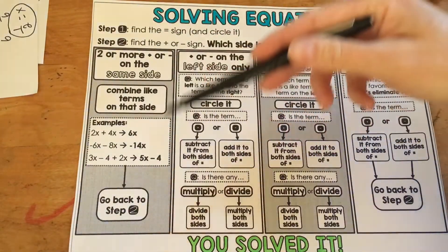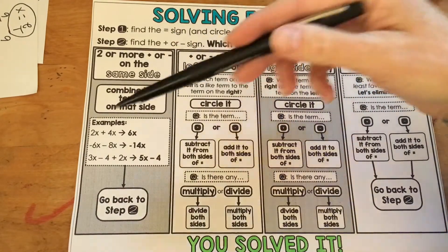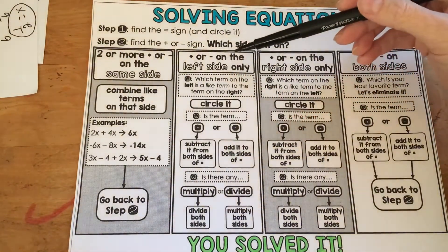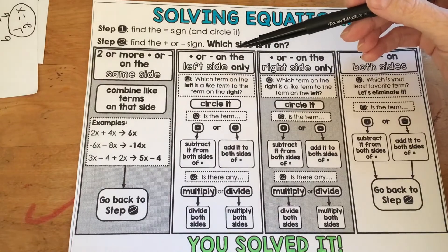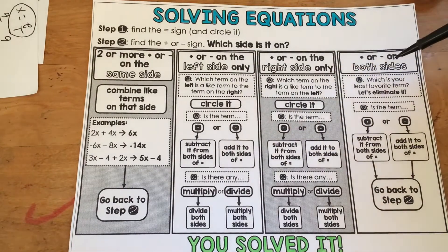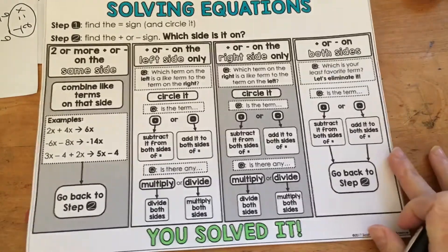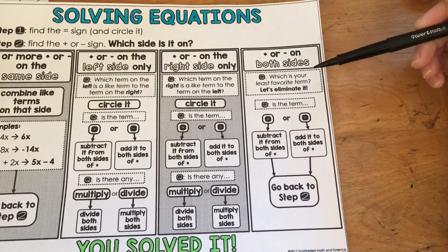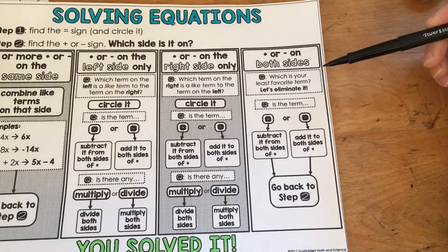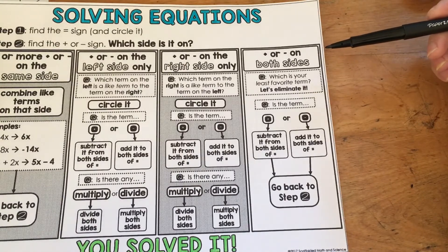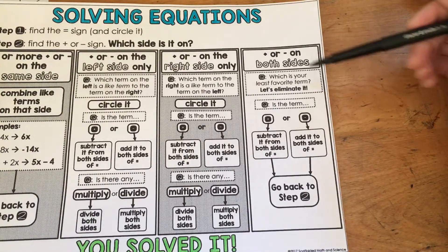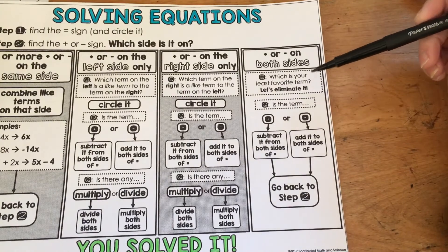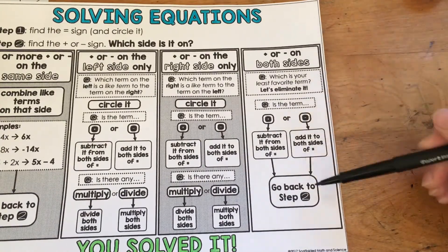There's directions here if there's two or more addition or subtraction on the same side. Positive addition or subtraction on the left side only, right side only, and on both sides. When it's on both sides, I ask the students which is your least favorite term? I kind of guide them to add to both sides if they can. But let's eliminate your least favorite term. And then we kind of go right back to step two.